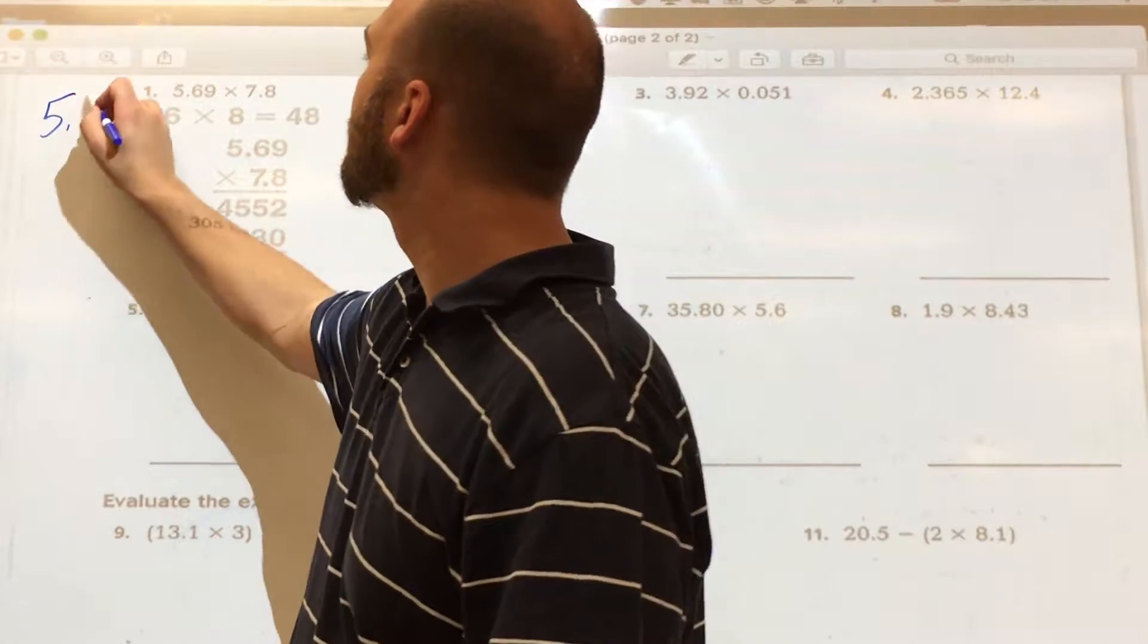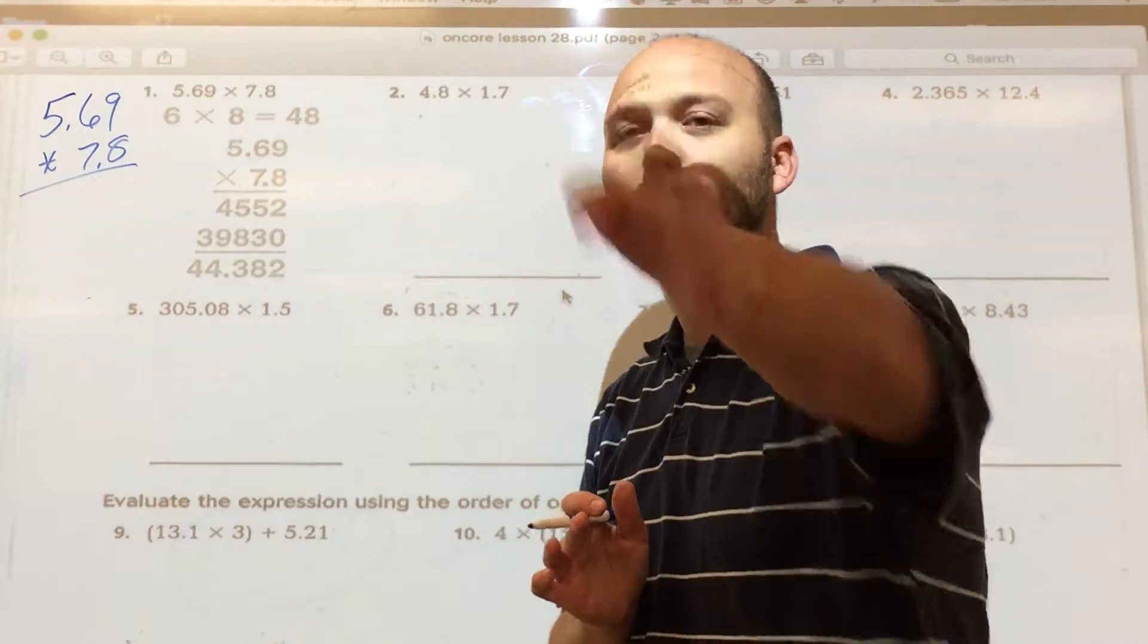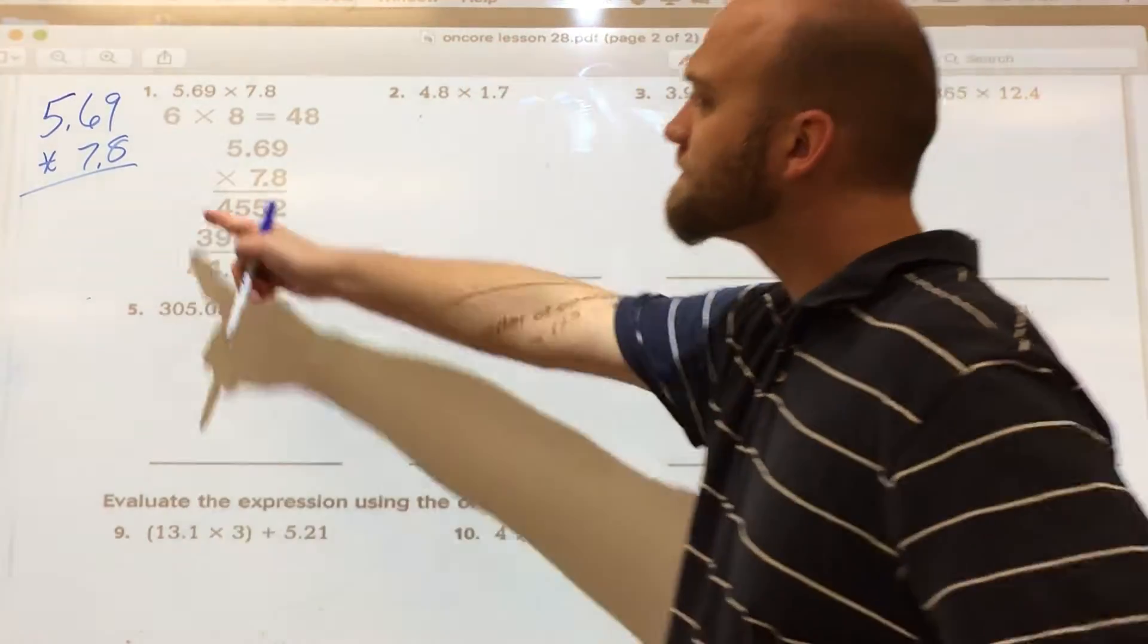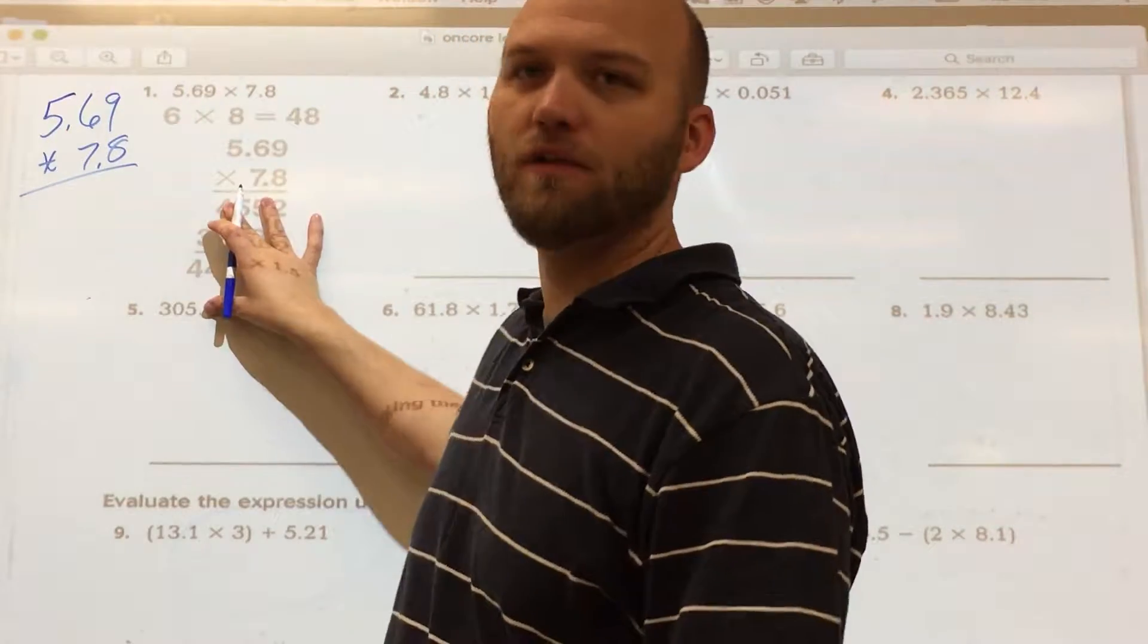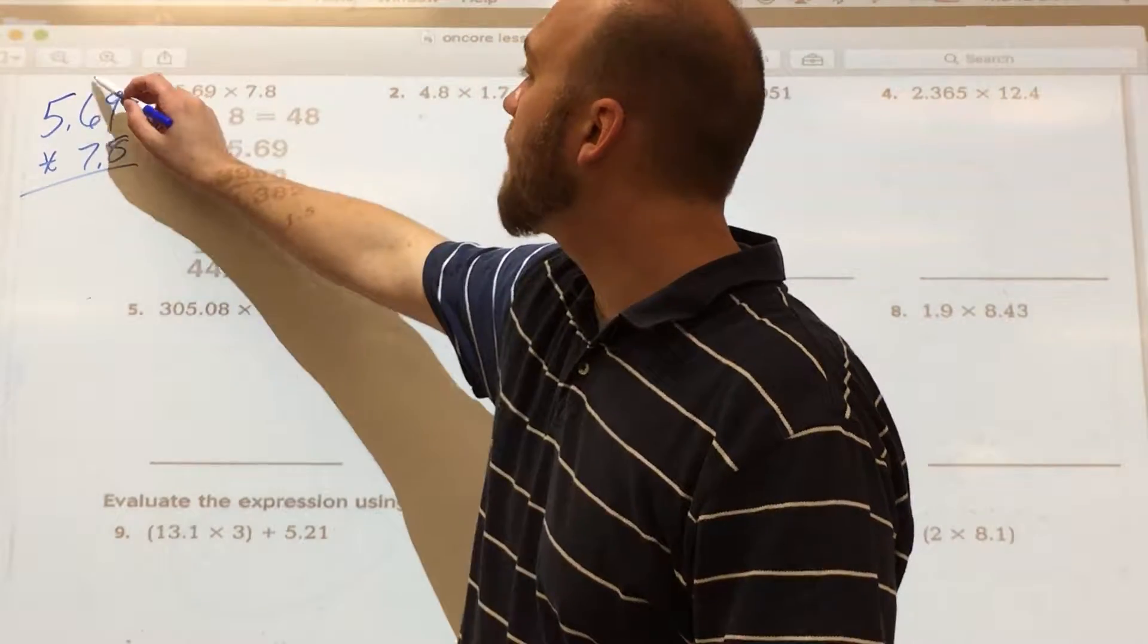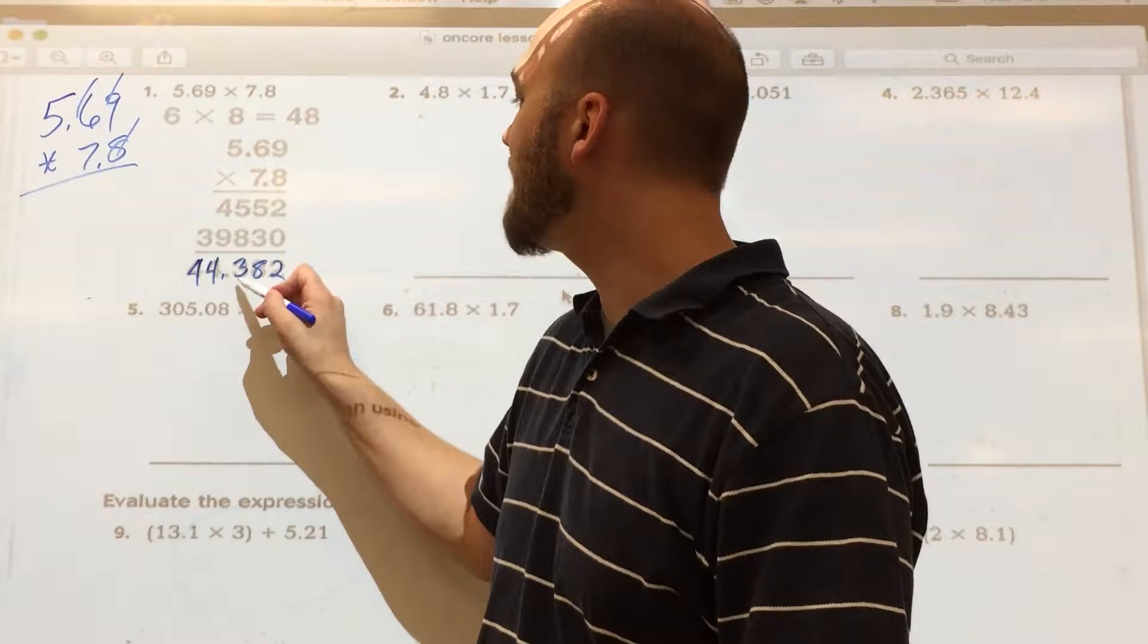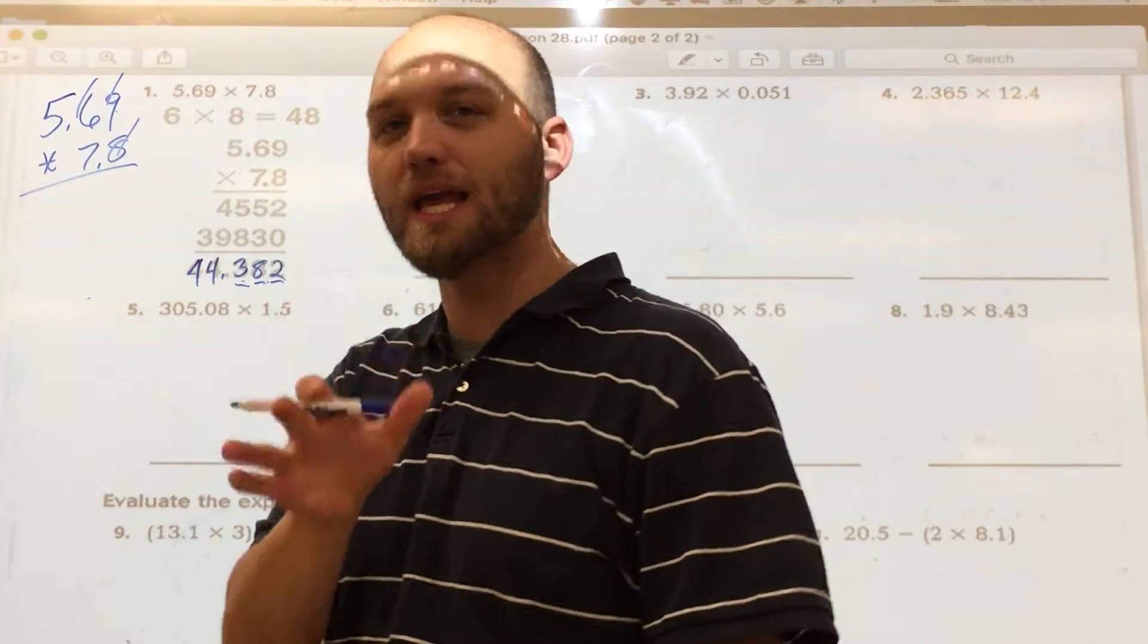So if I look at my first problem, 5.69 times 7.8. Again, we're multiplying and dividing. We don't have to line up our decimals here. In fact, I think it's confusing. So only in addition and subtraction do you line up your decimals. But in your multiplication and division, you just put your numbers out. And I multiply 8 across here and I multiply 7 across everything. They've shown all of that for you here. The question I want to know is how many digits will I have to the right of my decimal in my answer. Well, I've got 1, 2, 3 in my problem. So if I look here, my correct answer is 44.382 thousandths. I've got 1, 2, 3 in my answer. So again, double check your decimal.